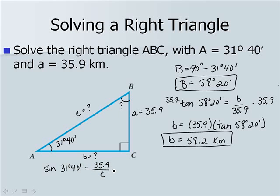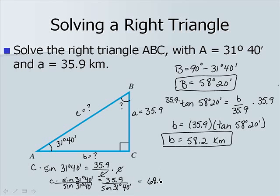In this case, we would multiply both sides by c, and then we would end up with c times the sine 31 degrees 40 minutes equal to 35.9. To solve for c, we would divide both sides by the sine of our angle. We end up with a value for side c of 68.4 kilometers.